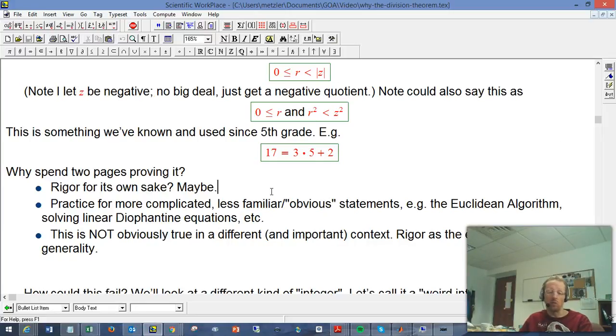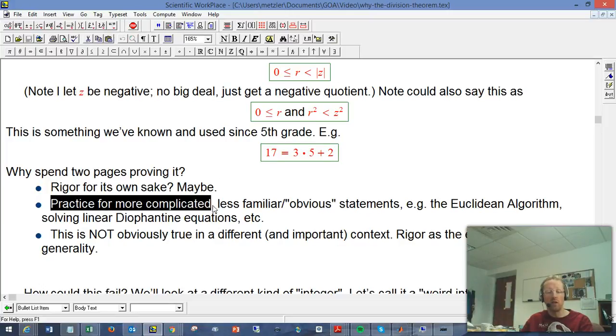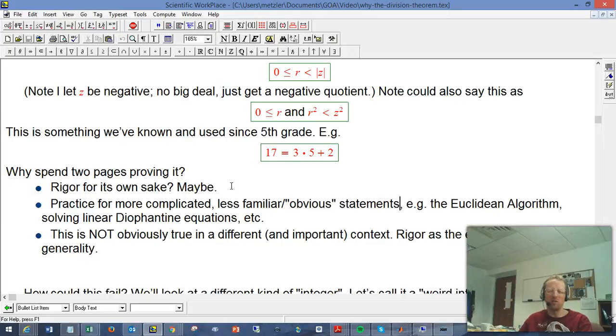A better argument is that it's practice for more complicated and less familiar or "obvious" statements. It's totally necessary to be really careful about proving something that's not obvious and you're really not sure if it's actually true. That doesn't apply too well to the Division Theorem because very few people are going to doubt this theorem. We have so much experience with integers and fairly decent intuition about why it's true, even if you might have a hard time writing down something to the standard of rigor in modern mathematics.